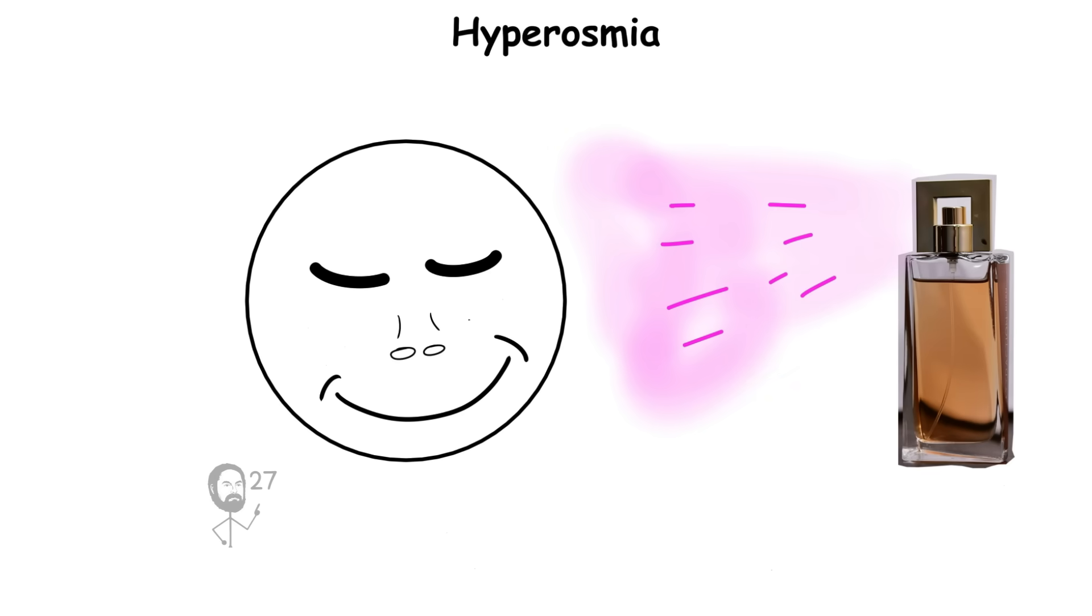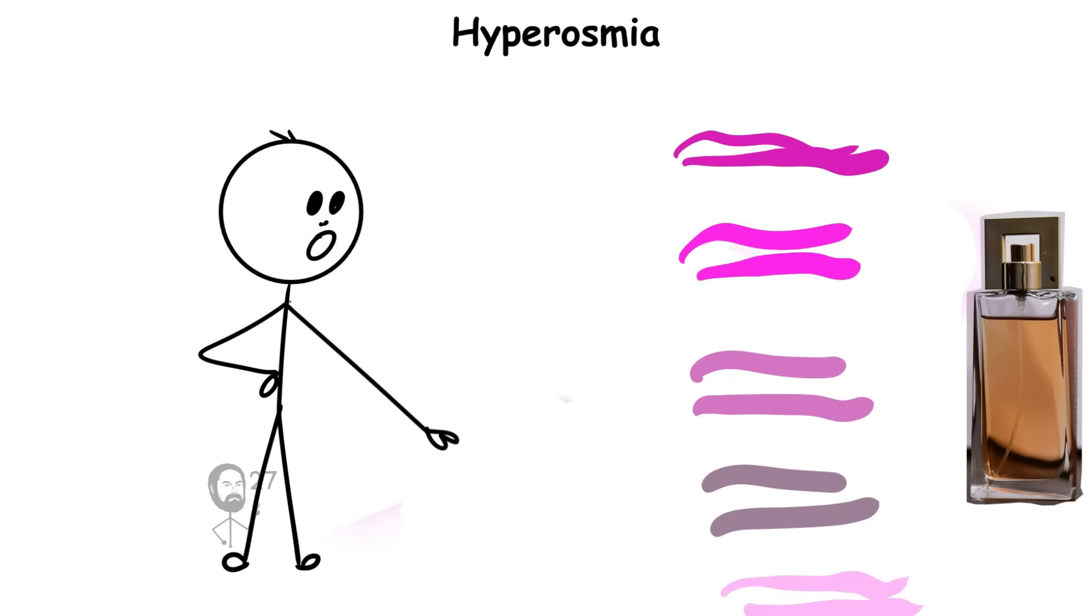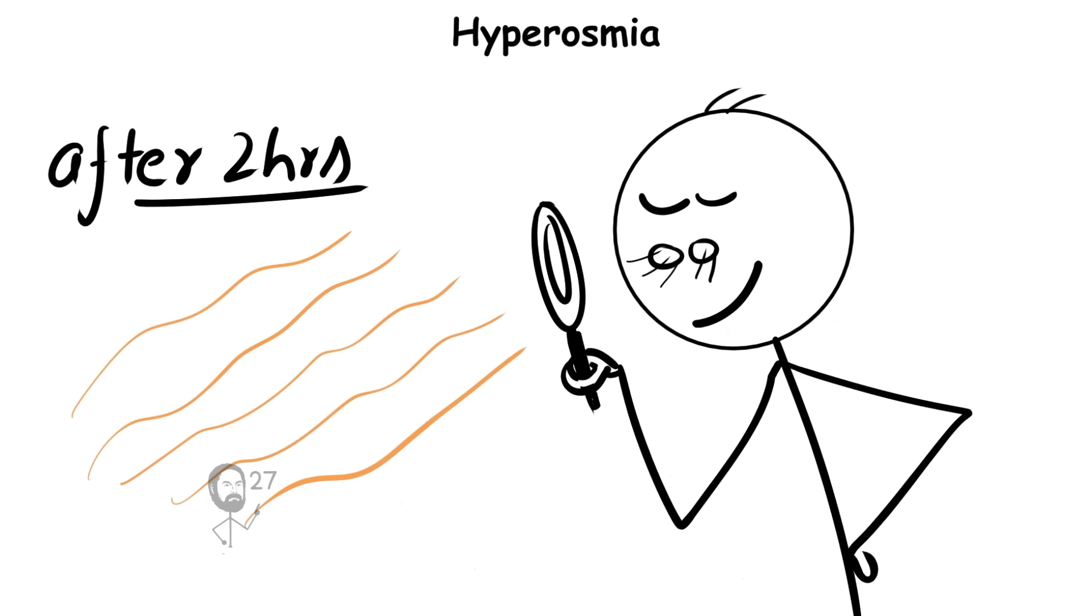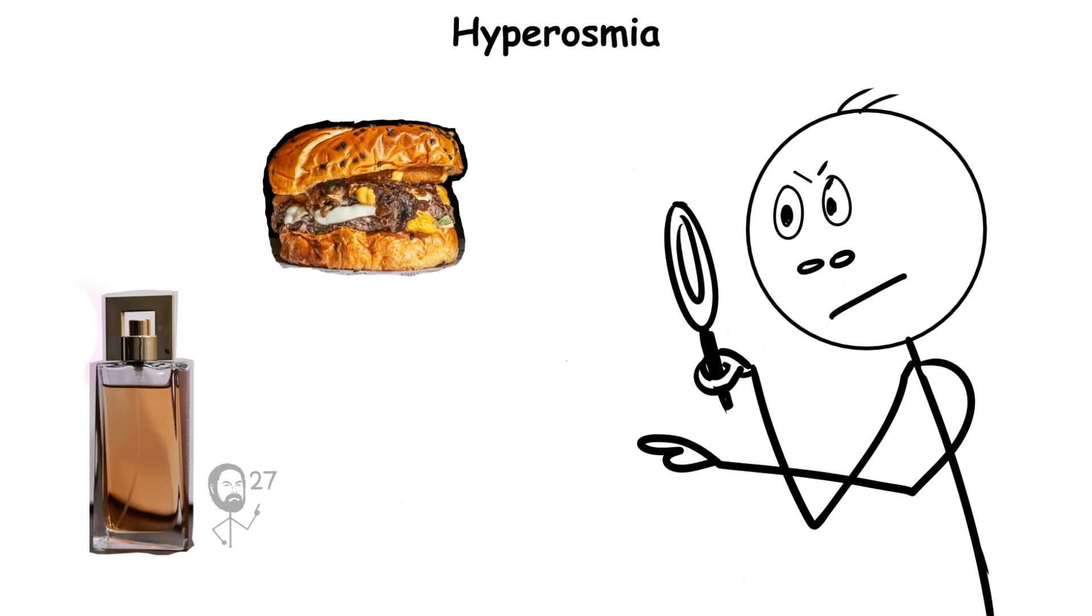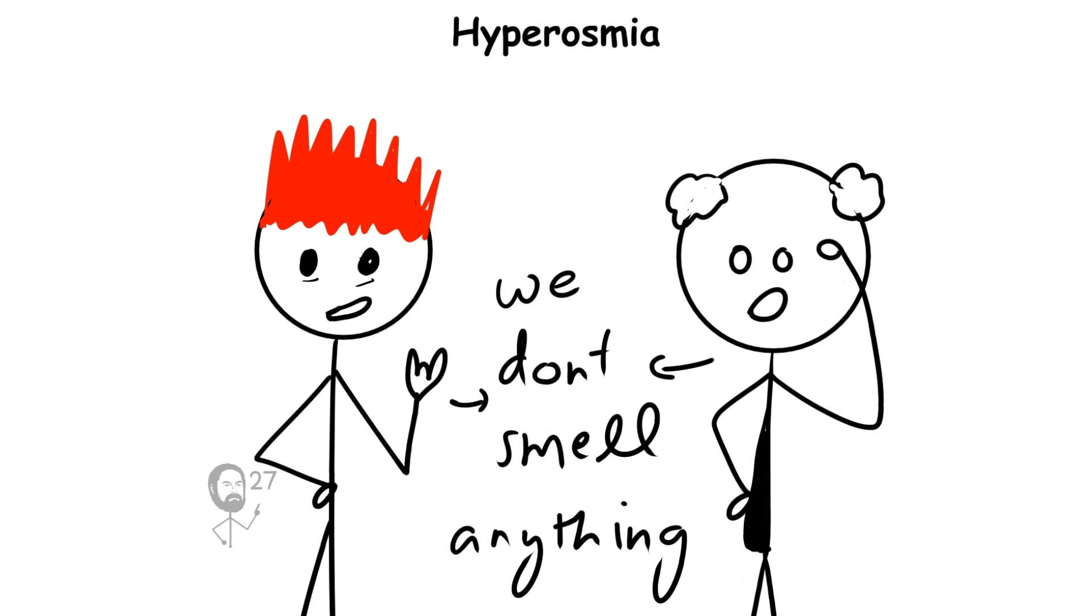Instead of faint impressions, scents arrive with detail and intensity, allowing these individuals to separate complex mixtures into their individual components. This means they can detect odors long after others believe they have faded, or notice subtle differences in perfumes, foods, or environments that most people miss entirely.